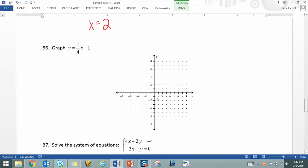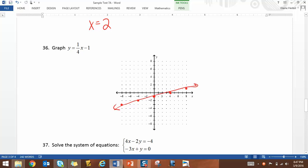36 we graph, starting down at negative 1. We're going up 1 and over 4 in the positive direction. Down 1 over 4 this way. Then we get our line. No shading, it's an equation.